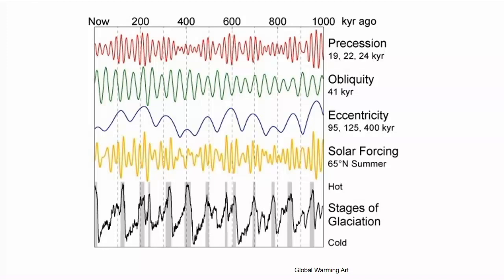These orbital changes cause very little change in the average energy the whole planet receives, but they do change where on the planet that energy is received. The yellow curve here shows the amount of energy received at 65 degrees north in northern hemisphere summer. The seasonal heating — which matters for whether an ice sheet will grow or not — wiggles up and down. The idea is that these wiggles match what's happening in the climate record and that orbital forcing is driving those changes. However, the yellow curve doesn't really look like the climate record curve — it's not a terribly convincing argument on its face.